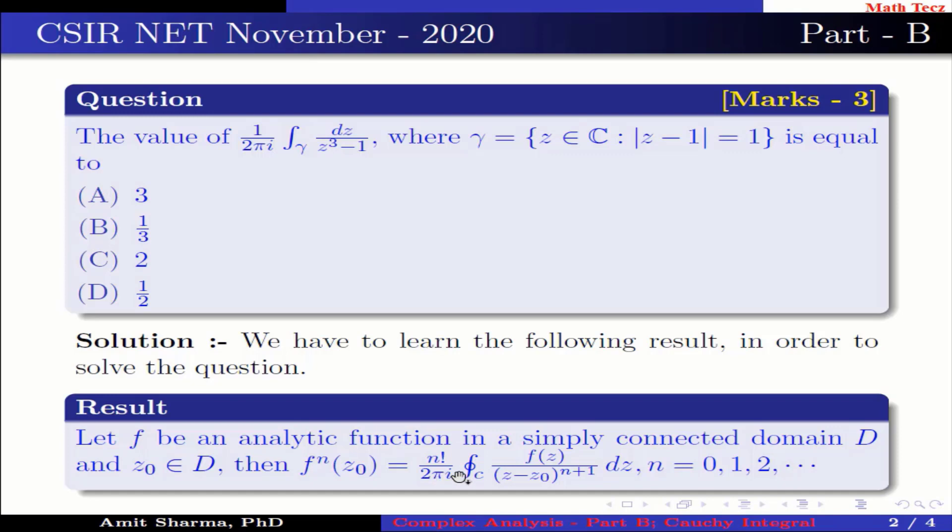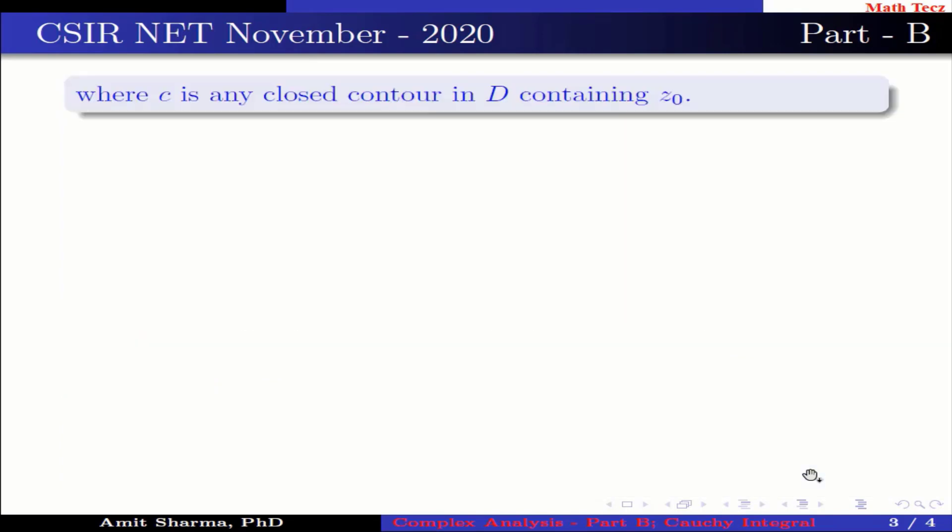...f(z) divided by (z minus z naught) to the power n plus 1, dz, where n varies from 0, 1, 2, and so on, where C is any closed contour in D containing z naught.